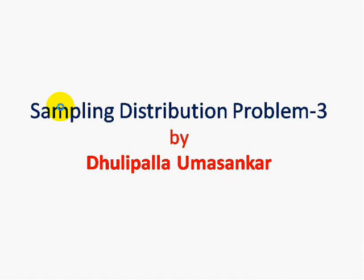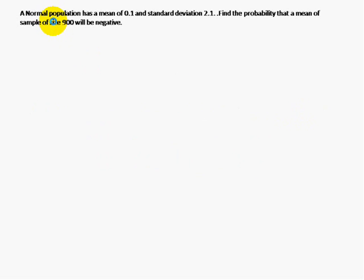Today we are going to discuss a sampling distribution problem. Here we have a normal population with mean 0.1 and standard deviation 2.1. Find the probability that a mean of sample size 900 will be negative.